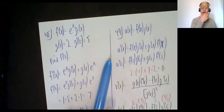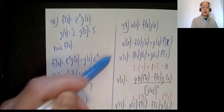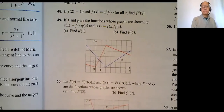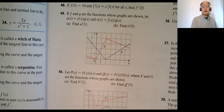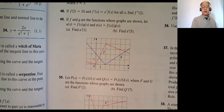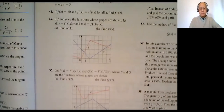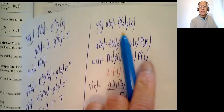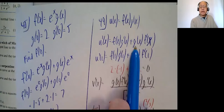Problem 49: F and g are functions given in the textbook. U of x is f of x times g of x; v of x is f of x divided by g of x. Find u prime of 1 and v prime of 5. I'm going to flip back and forth between here and the book. U prime of x by the product rule is first times the derivative of the second plus second times the derivative of the first. They want u prime of 1, so I plug in 1: f of 1 times g prime of 1, plus g of 1 times f prime of 1.